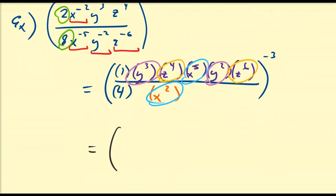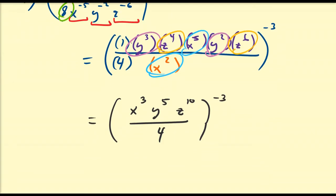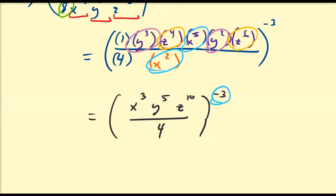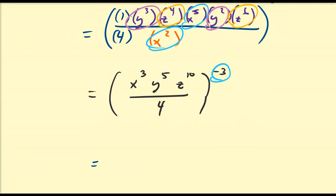Alright, so what is that going to be? We have no remaining coefficients since 1 times anything is itself. So x^5 divided by x^2 gives x^3. For our y's, y^3 times y^2 is y^5. z^4 times z^6 is z^10, all divided by 4. Since the outer exponent is negative, I'm going to flip the entire fraction to make it positive. So this is going to be equal to 4 divided by x^3 y^5 z^10, all to the power of 3.